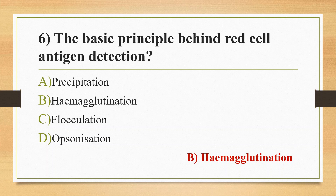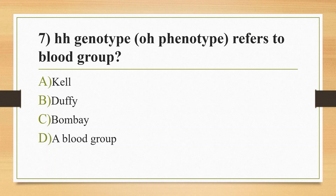Seventh question: HH genotype, i.e., Oh phenotype, refers to which blood group? Option A: Kell. Option B: Duffy. Option C: Bombay. Option D: A blood group. The answer is option C, Bombay blood group. Bombay blood group was discovered by Dr. Y.M. Bhende in 1952 from Mumbai. The Bombay blood group lacks H antigen on the red cell membrane and has anti-H in the serum. It fails to express any A, B, or H antigen on red cells or other tissues.